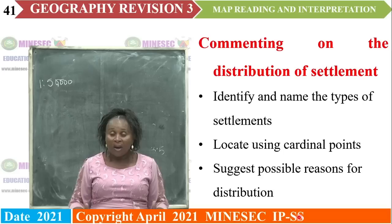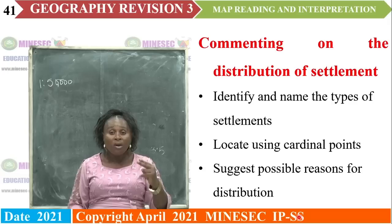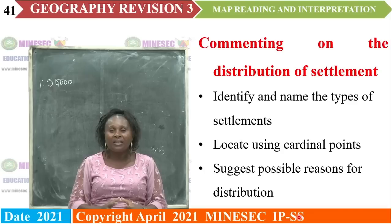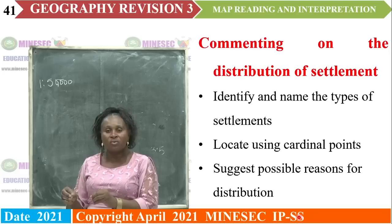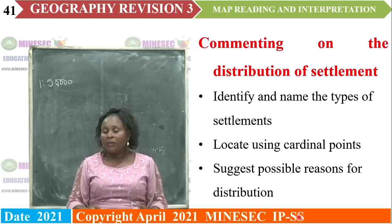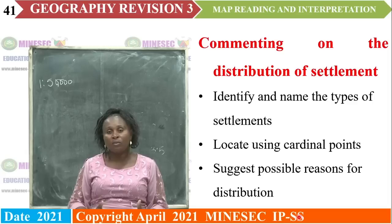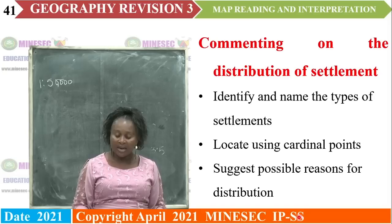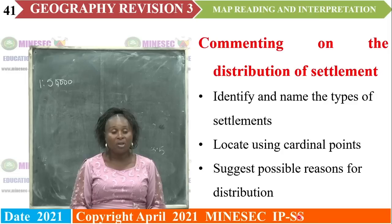To comment on type of settlement, we have only two types — a rural settlement and an urban settlement. To identify an urban settlement, look at the way the buildings are: if they are clustered and shaded, it is urban. If they are scattered, it is a rural settlement. You can also look at the functions — if there are many functions, the settlement is urban. For distribution of settlement, you can identify and name the types, locate the settlement using cardinal points, and suggest reasons why those settlements are at that specific location — on top of a hill, or at the foot of the hill.